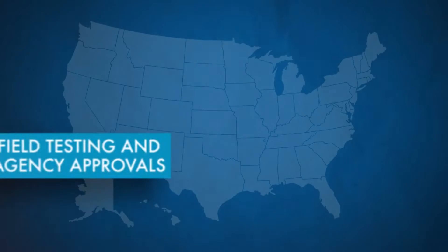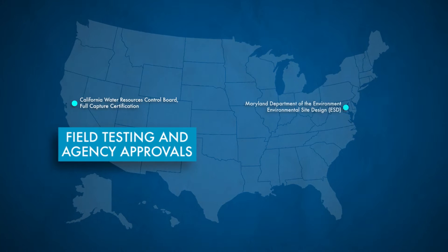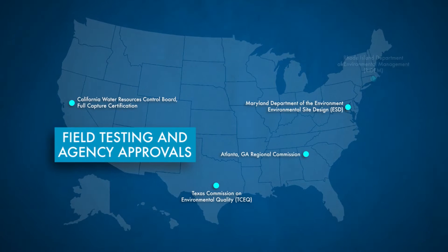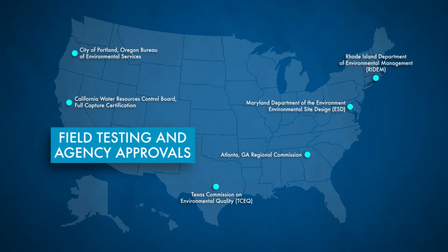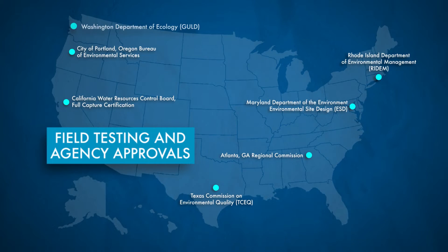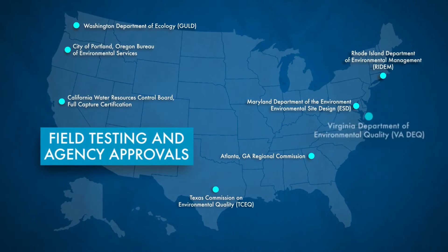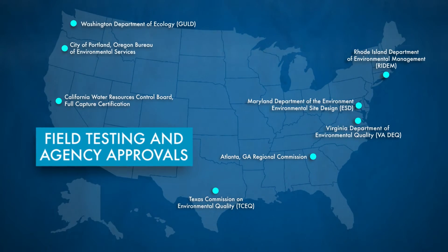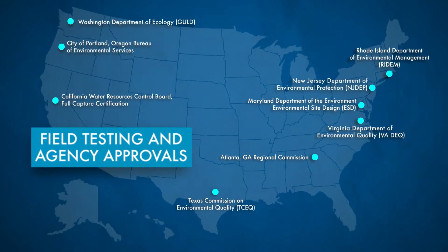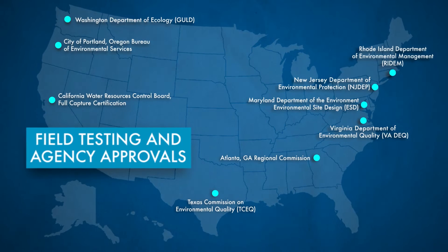The modular wetlands linear has been field tested on numerous sites across the country and is approved through various federal, state, and local programs, including the Washington State Department of Ecology, the Virginia Department of Environmental Quality, the New Jersey Department of Environmental Protection, and many more.